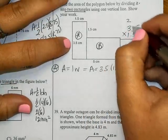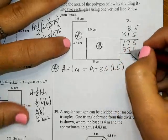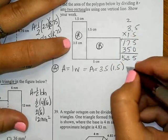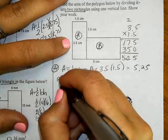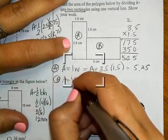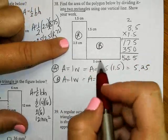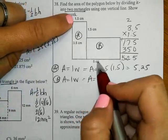For rectangle A, the area, the length is 3.5 times 1.5. Working through the multiplication: 5 times 5 is 25, 15 plus 1 is 16, carrying through. With 2 decimals, the area for that one is 5.25.